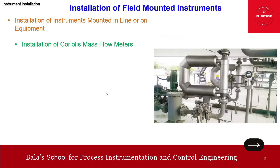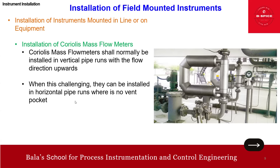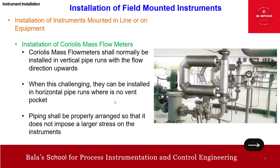Coriolis meters shall normally be installed in vertical pipe with flow direction upwards, but this is the only flow transmitter you can mount in any position. When vertical installation is challenging, it can also be installed in a horizontal pipe where there is no air pocket — that we need to ensure. Vertical installation is preferred to avoid air pockets. Importantly, there is no upstream or downstream straight run requirement for Coriolis — it's the only transmitter with this feature. Proper support for mounting is still required.